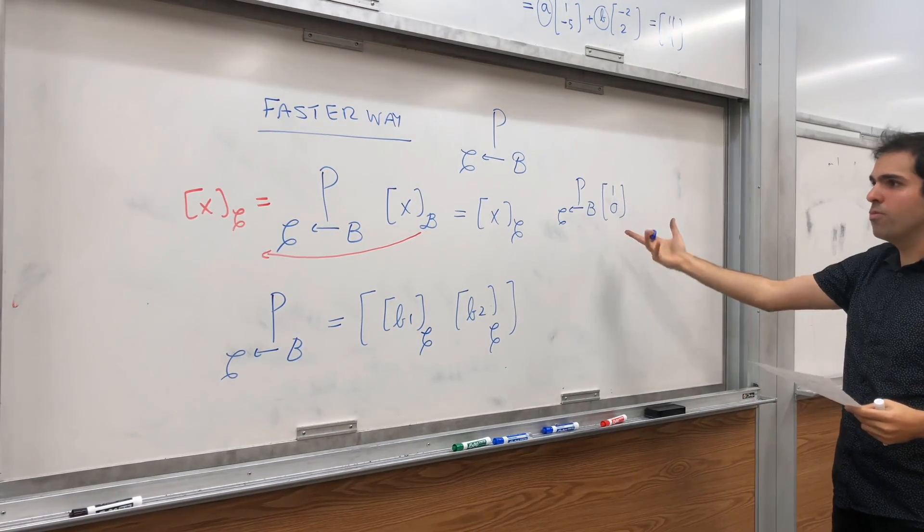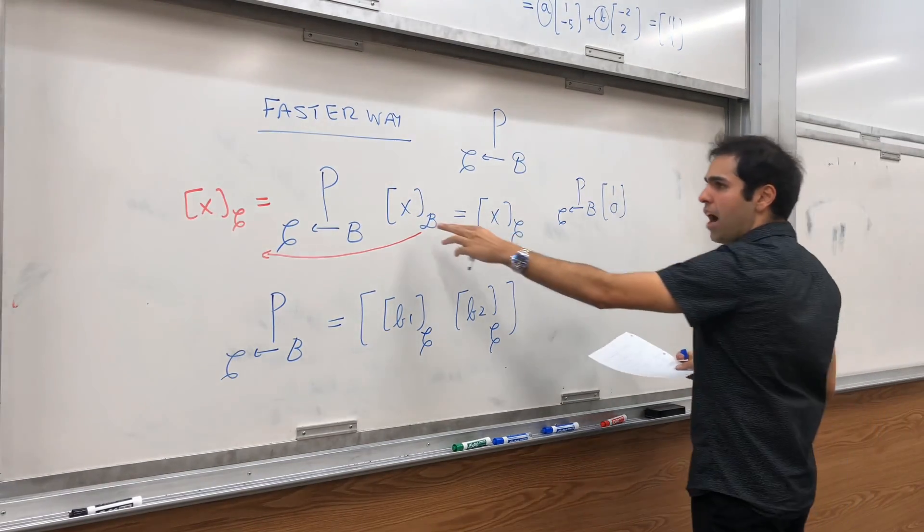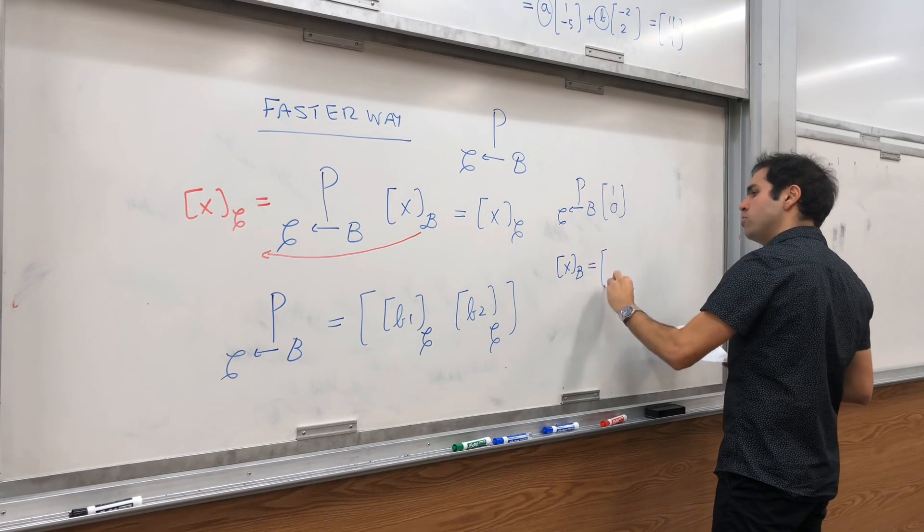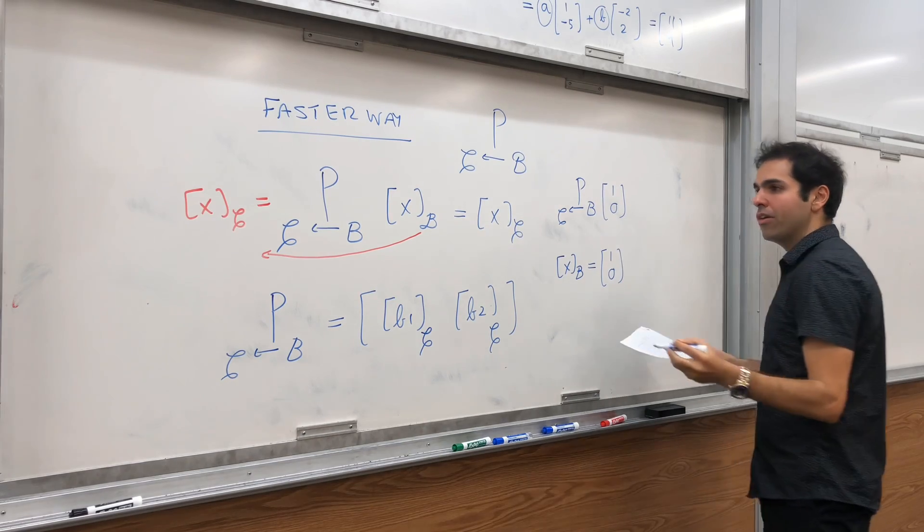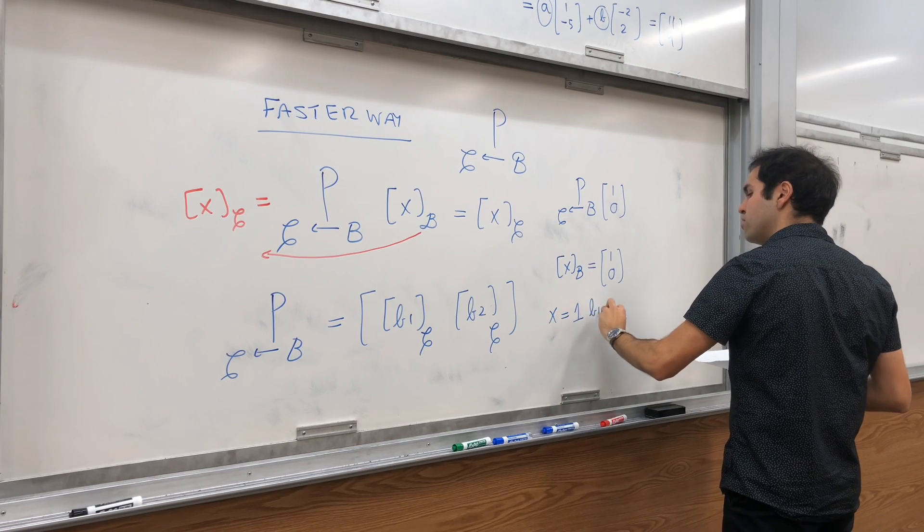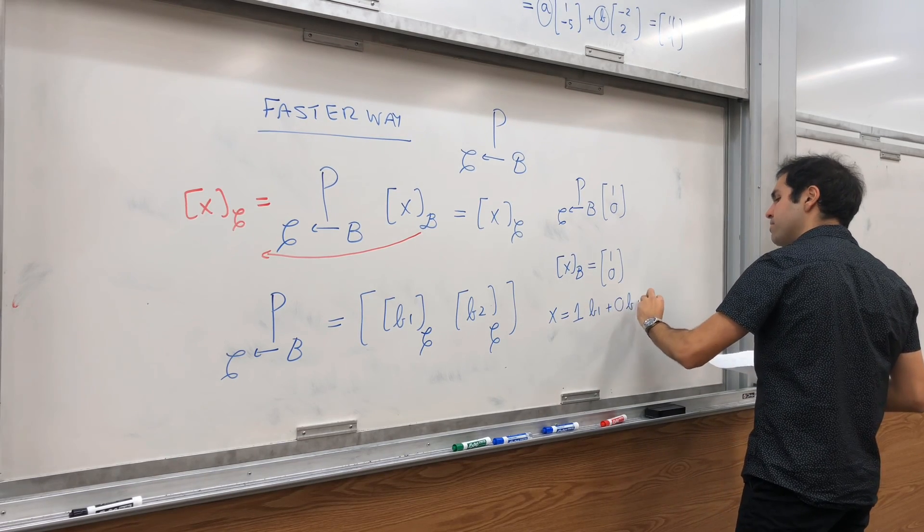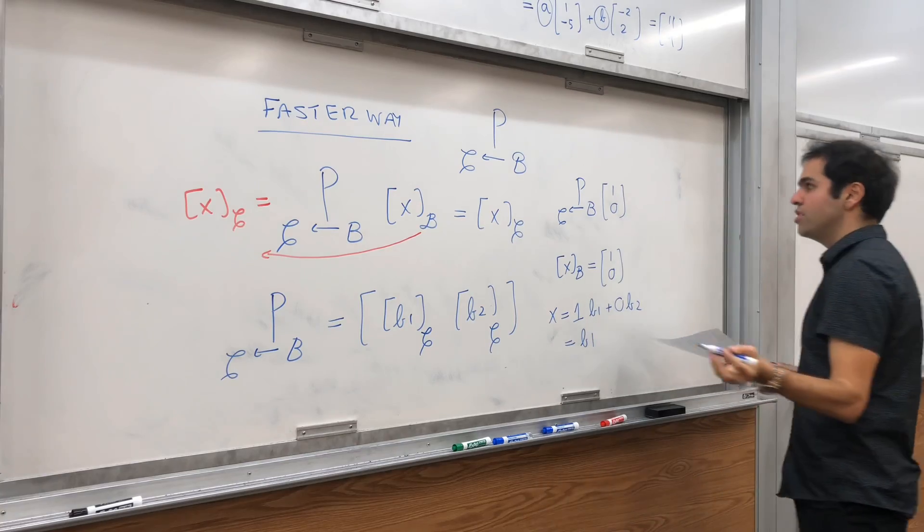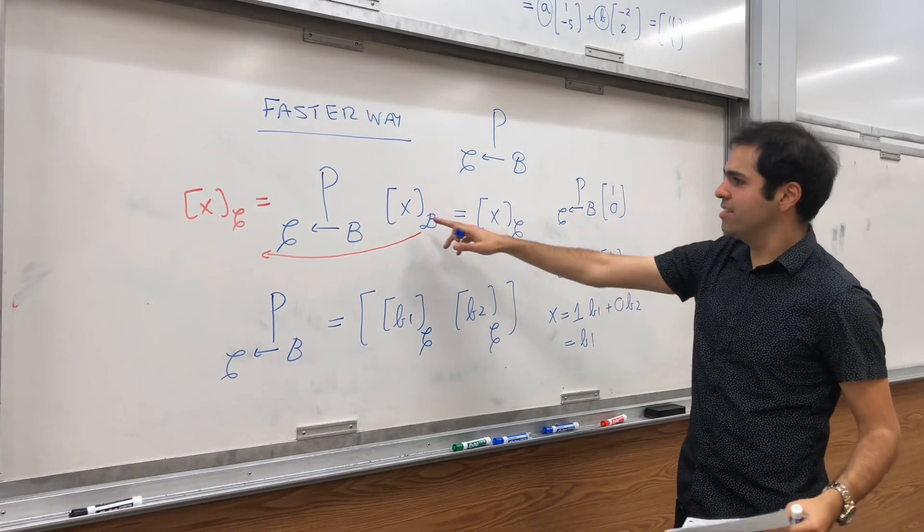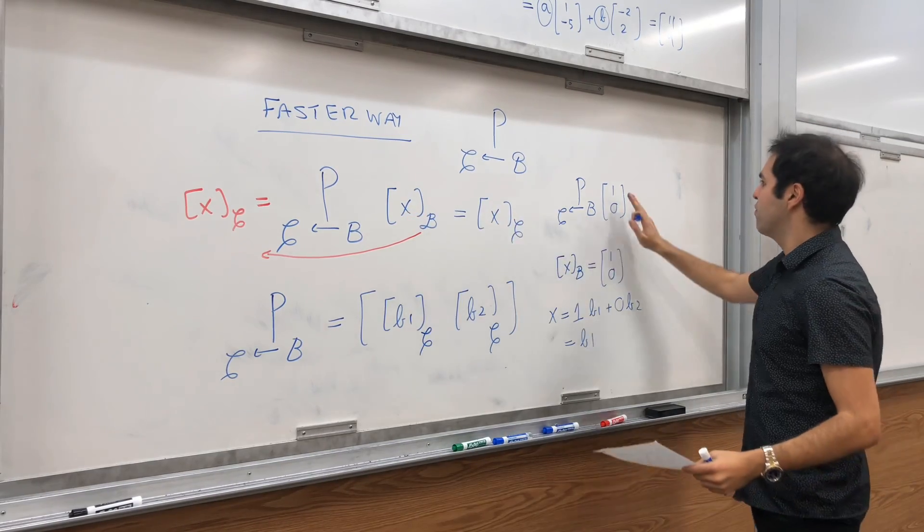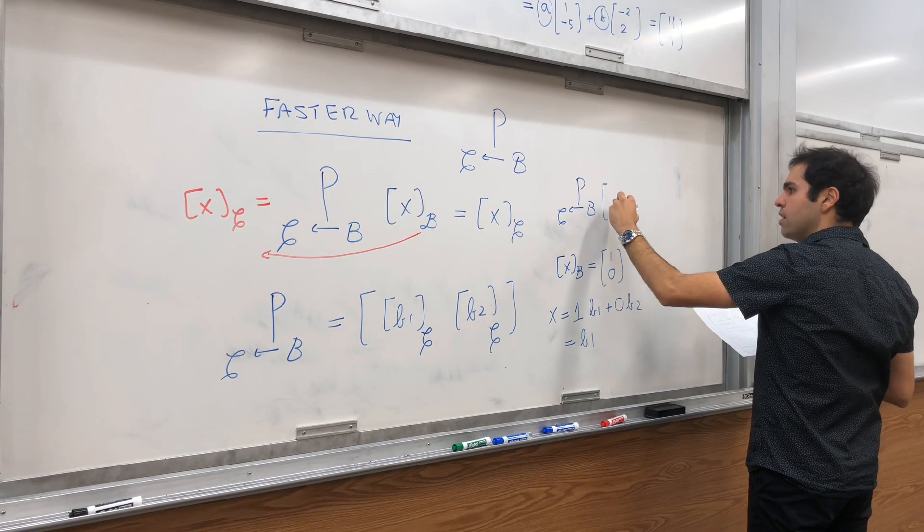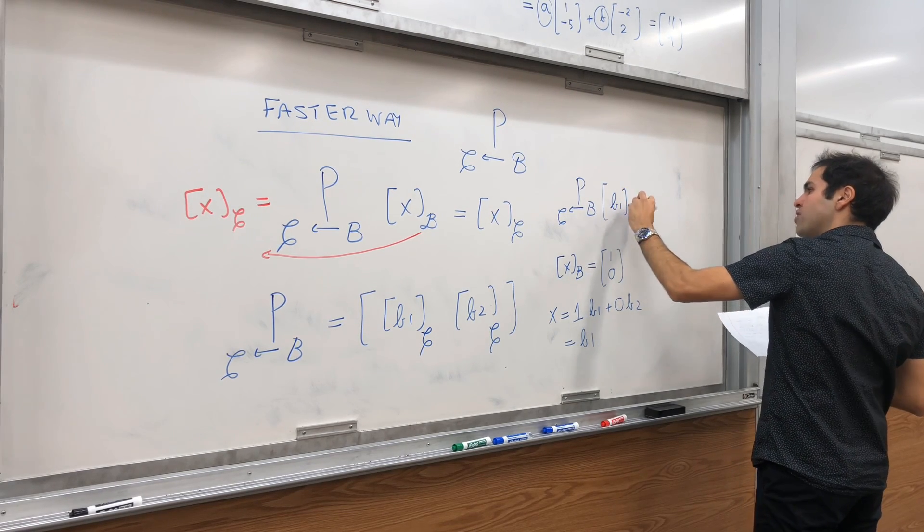Well, what does 1, 0 mean here? It means a vector X, whose coordinates with respect to B are 1, 0. But, this just means that X is 1 times the first vector, plus 0 times the second vector. So, X is just B1. And, what does that mean? So, in other words, we have P, B, C of... In other words, again, the first column is B1 with respect to B,